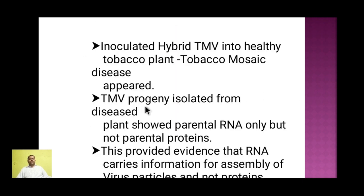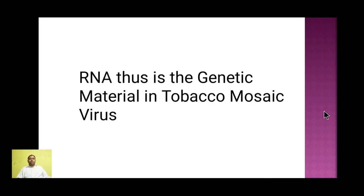The TMV progeny isolated from the disease showed parental RNA only from type A, but not parental protein. This proved that RNA carries the information for the assembly of viral particles, and not the proteins, as RNA was able to direct the formation of viral proteins in subsequent progenies. Thus RNA was declared as a genetic material in Tobacco Mosaic Virus.